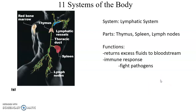The lymphatic system includes the thymus in the chest, the spleen, and lymph nodes scattered throughout the body. It has two major functions: returning excess fluids from tissues back to the bloodstream, and providing our immune response — the lymphatic system is very important for fighting pathogens that try to invade our body.